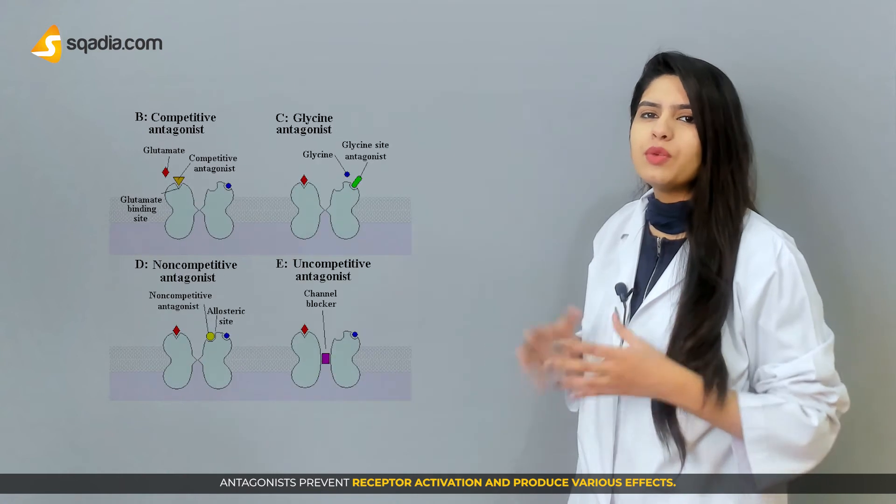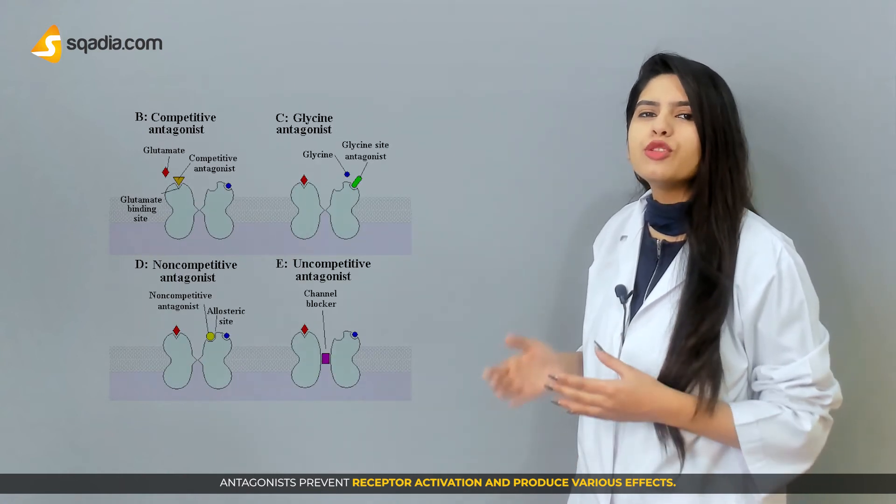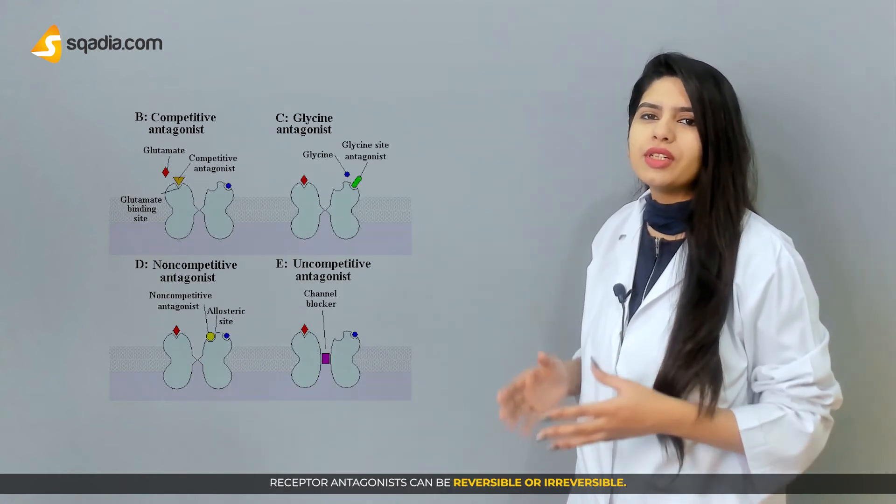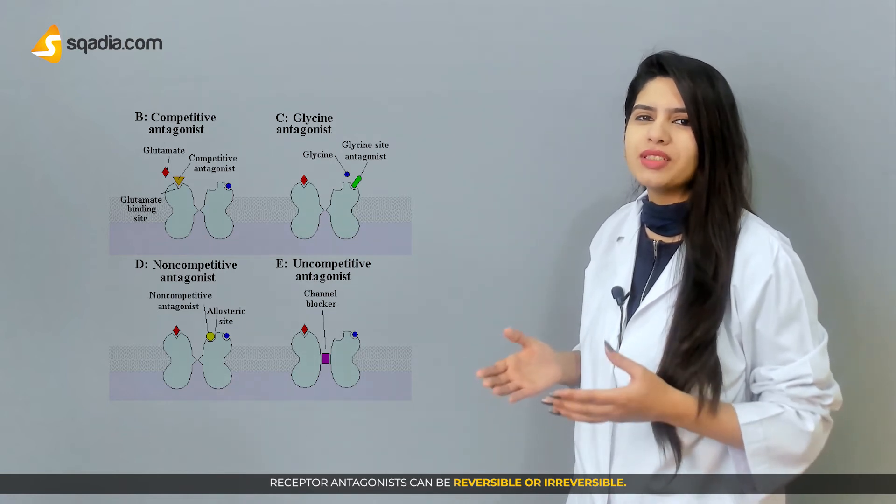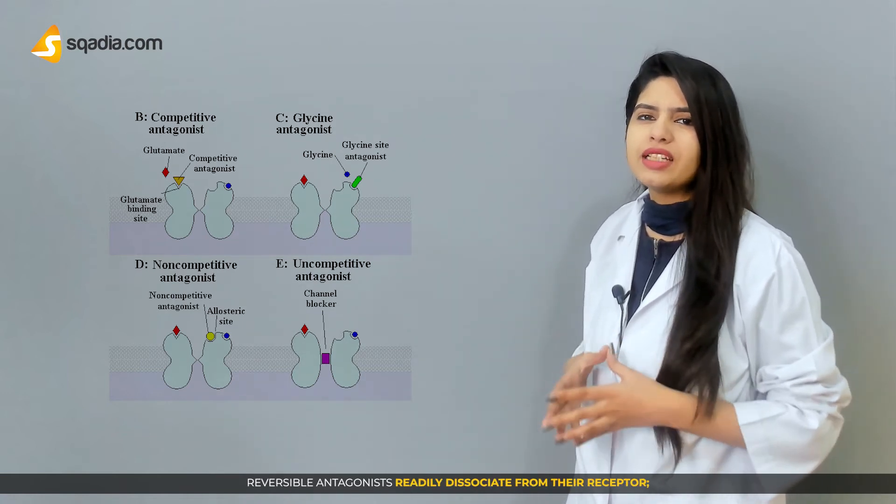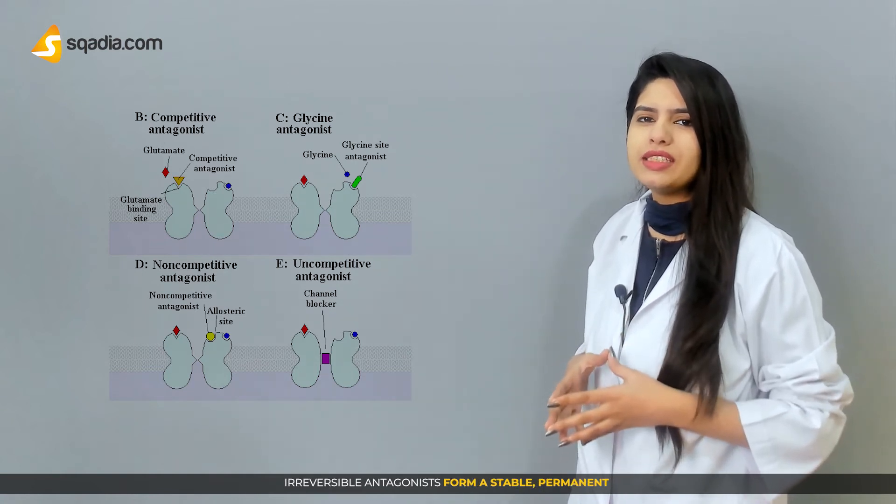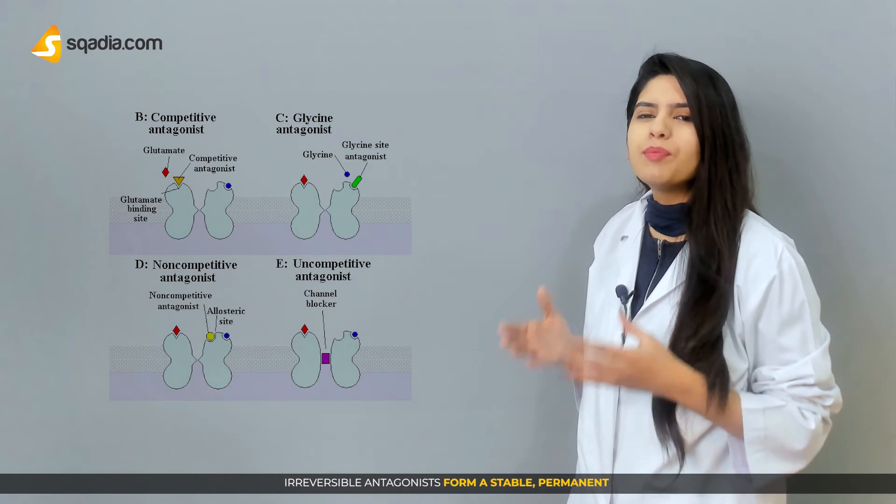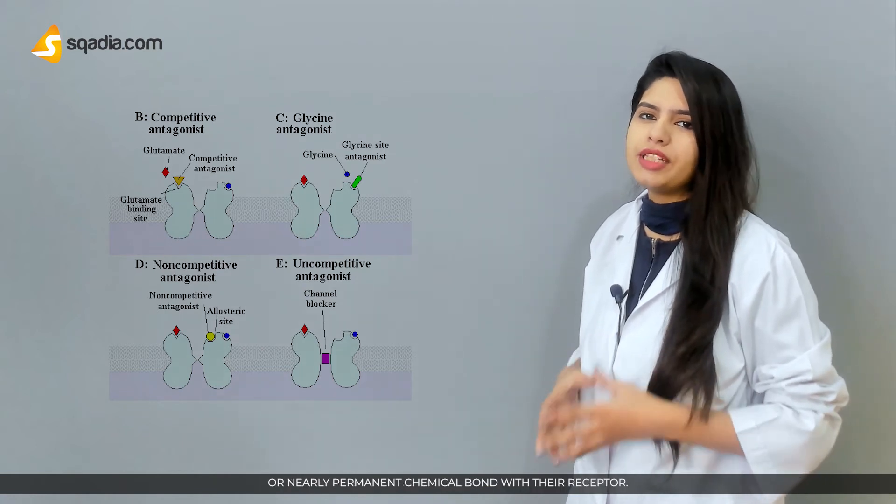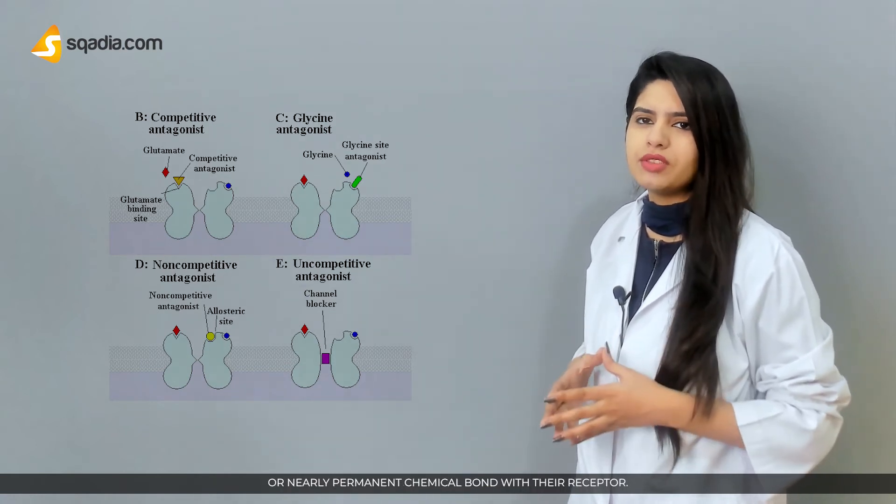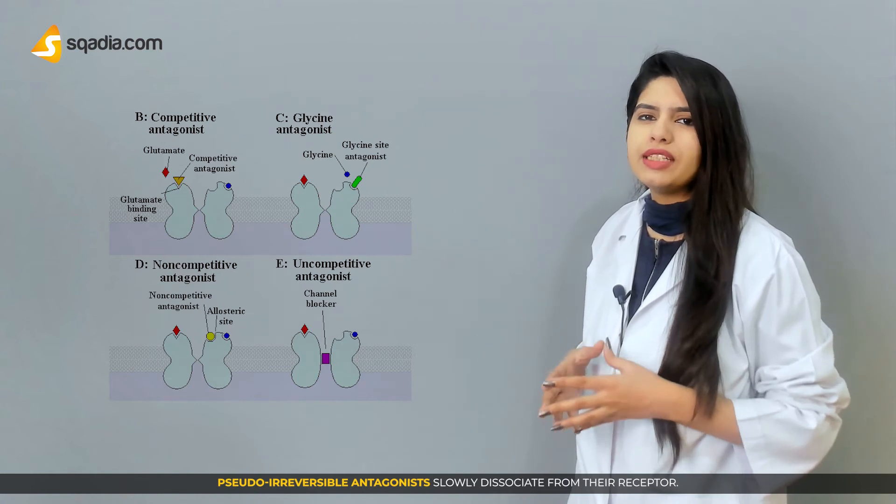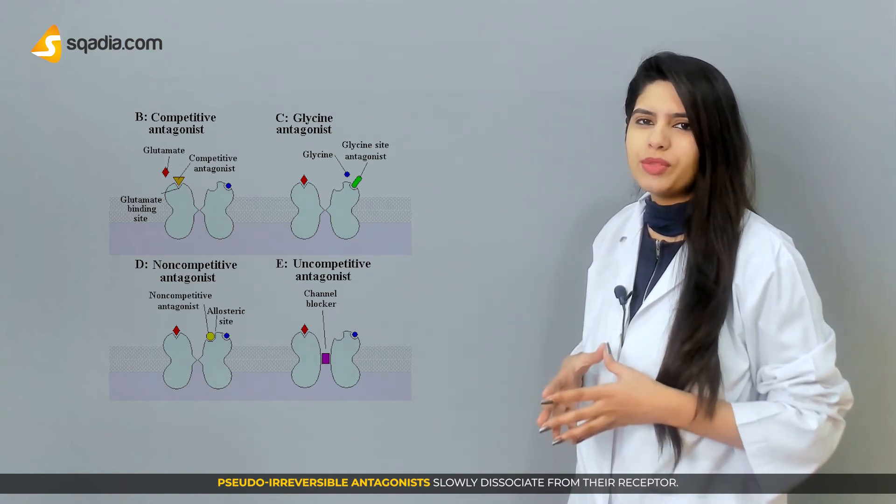Antagonists prevent receptor activation and produce various effects. Receptor antagonists can be reversible or irreversible. Reversible antagonists readily dissociate from their receptors. Irreversible antagonists form a stable, permanent, or nearly permanent chemical bond with their receptors. Pseudo-irreversible antagonists slowly dissociate from their receptors.